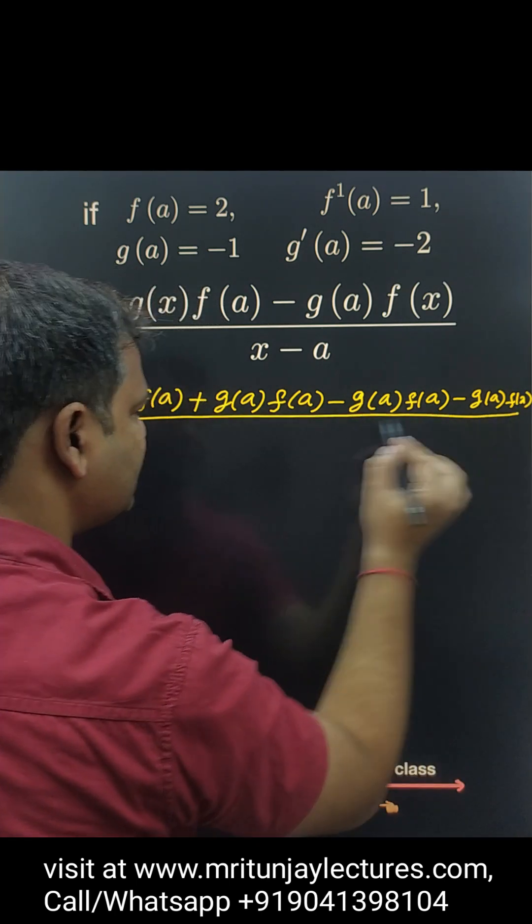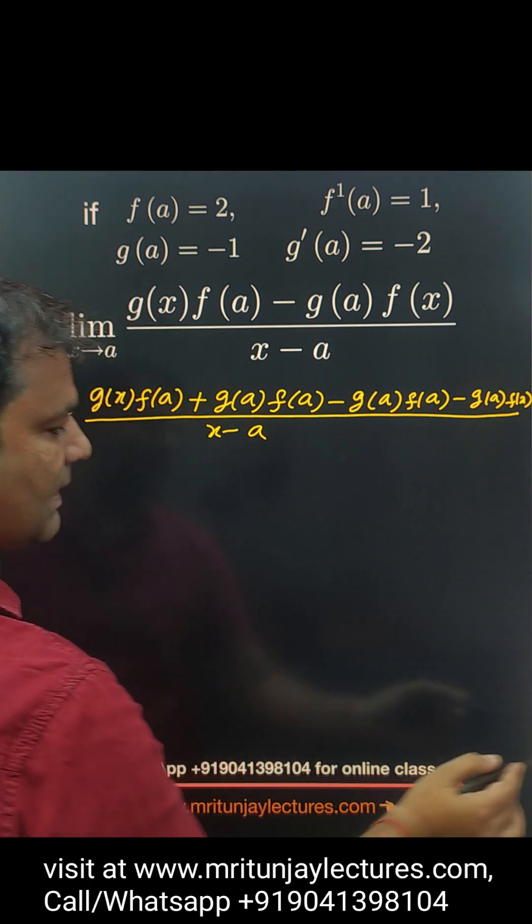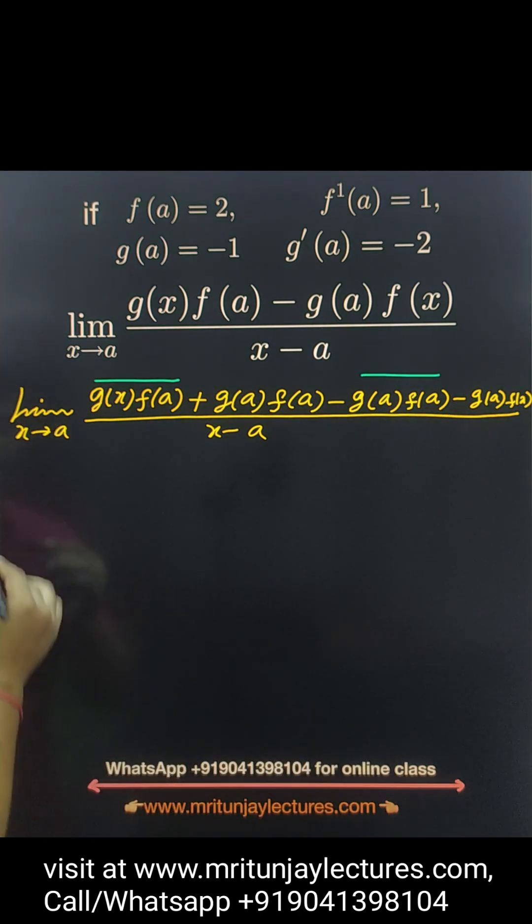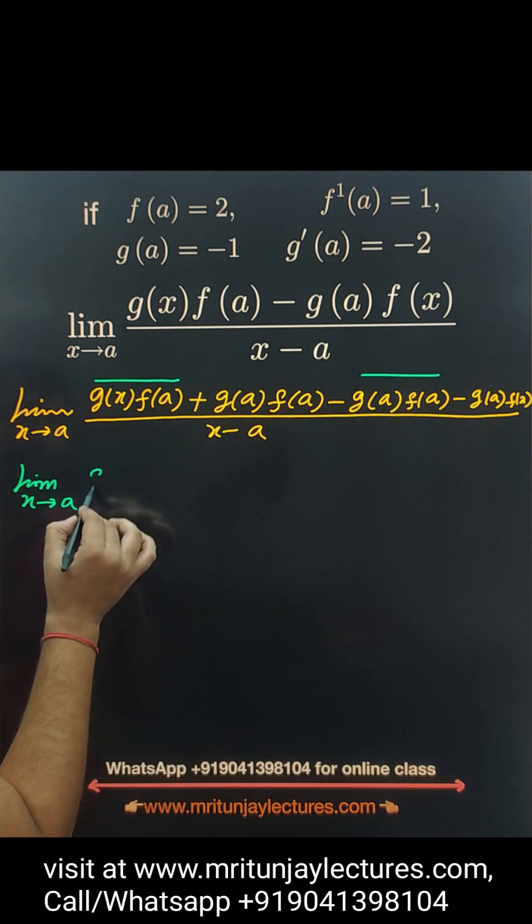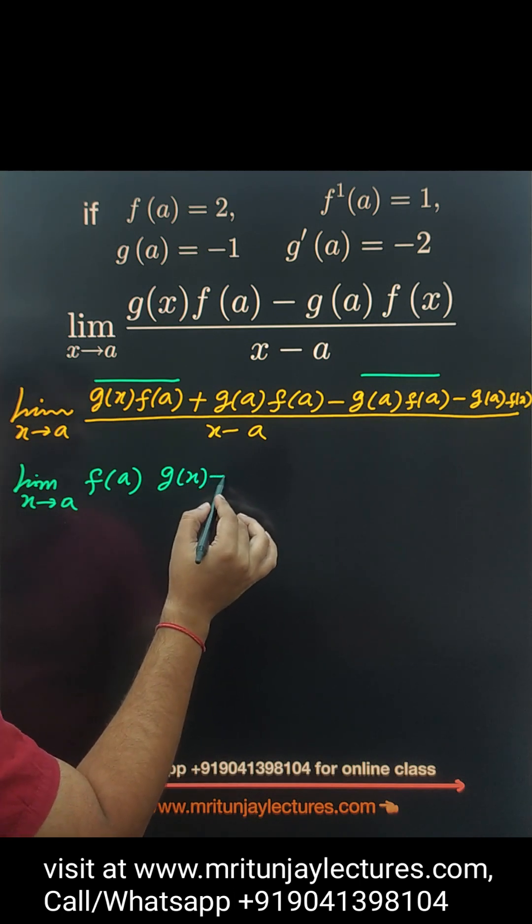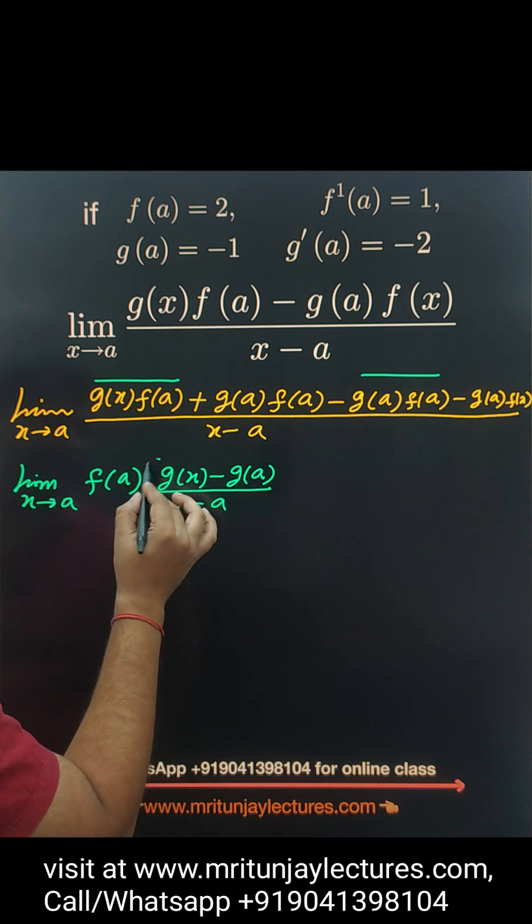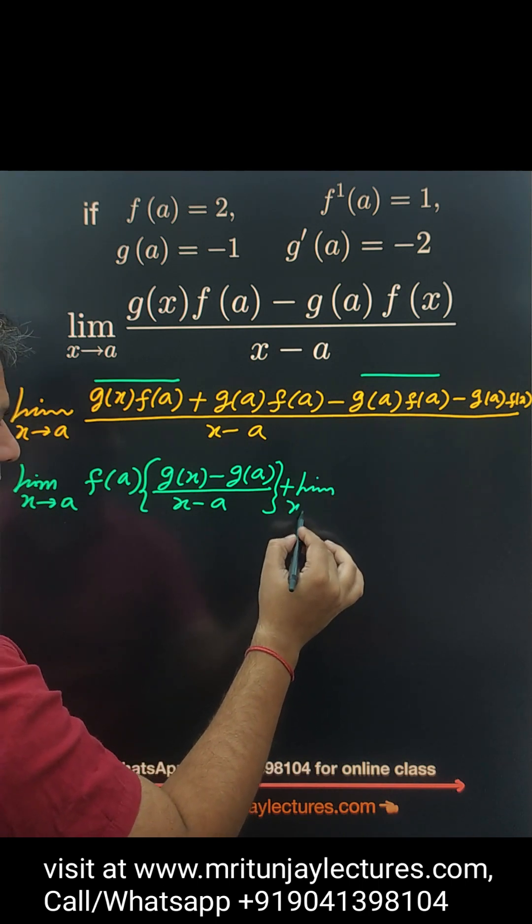Whole divided by x minus a. After that, look, limit x tends to a. If f(a) is common, this one, then this one written g(x) minus g(a) divided by x minus a plus limit x tends to a.